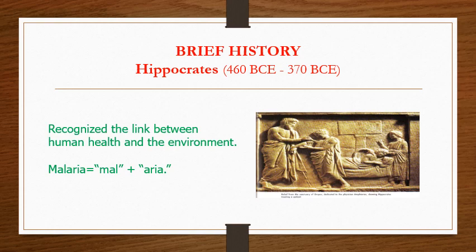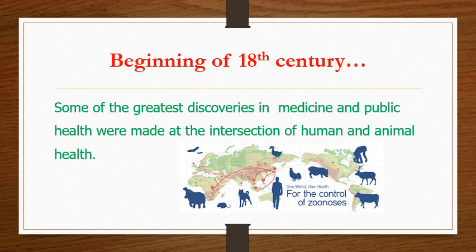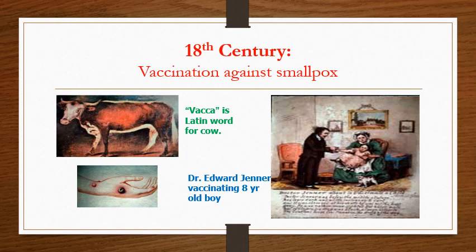Briefly, we will see about livestock and human disease. Way back in the time of Hippocrates, he recognized the link between human health and the environment, such as malaria. In the Middle Ages, there came the devastating disease plague, caused by the bacteria Yersinia pestis, which was actually spread through fleas carried by rats. At the beginning of the 18th century, some of the greatest discoveries in medicine and public health were made at the intersection of human and animal health. For example, the vaccine for the devastating disease smallpox was discovered from cowpox, and it was Dr. Edward Jenner who developed and used it for the first time.